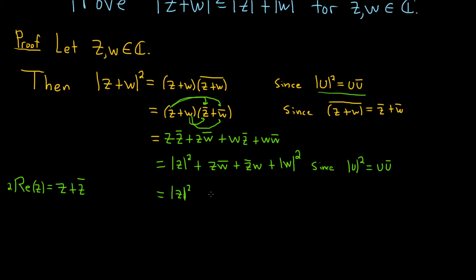Let's do it in steps. Let's start by putting two conjugate bars above the z — writing z double-bar. It's the same thing because if you take the conjugate of the conjugate you get the original thing. So we write z-double-conjugate times w-conjugate plus z-conjugate times w, plus the modulus of w squared. This is since the conjugate of the conjugate is the original: for any complex number u, the conjugate of the conjugate is just u itself.